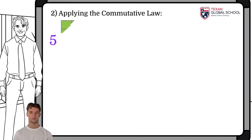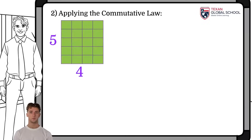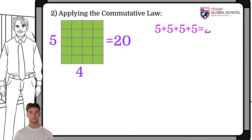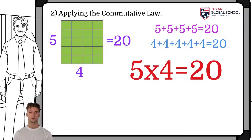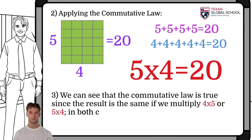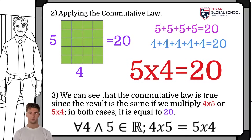Applying the commutative law, we will make the same product but inverting the factors as five by four. We create tables so that they have five rows by four columns. This is the multiplication of five by four, thus obtaining 20 units or 20 squares. We can also calculate the product of five by four by adding four times five, or adding five times four. In both ways, the result is 20. We verify that the commutative law is true since four times five and five times four both result in 20.